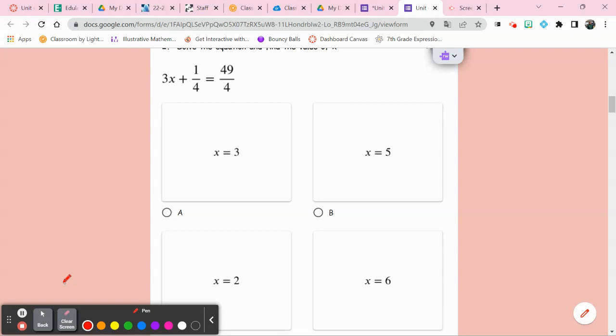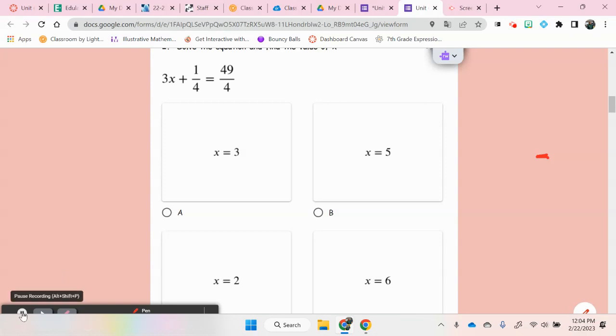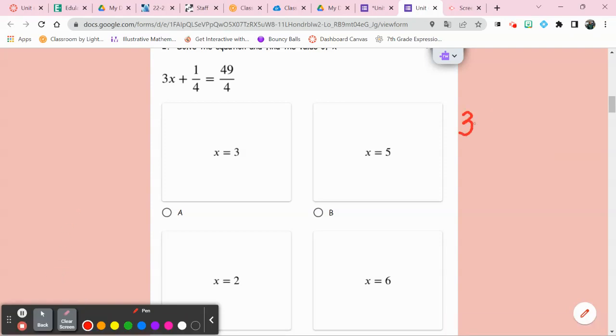This is the first equation we have: 3 times x plus 1/4 equals 49 over 4. First step, does it have parentheses or not? It doesn't. So that means our first step will be the opposite of add or subtract, or if the number's in front, getting the opposite of that number because we want a zero pair. The goal is to get the letter by itself on one side of the equal, the numbers and signs on the other side of the equal, by doing the opposite math to both sides of the equal sign.